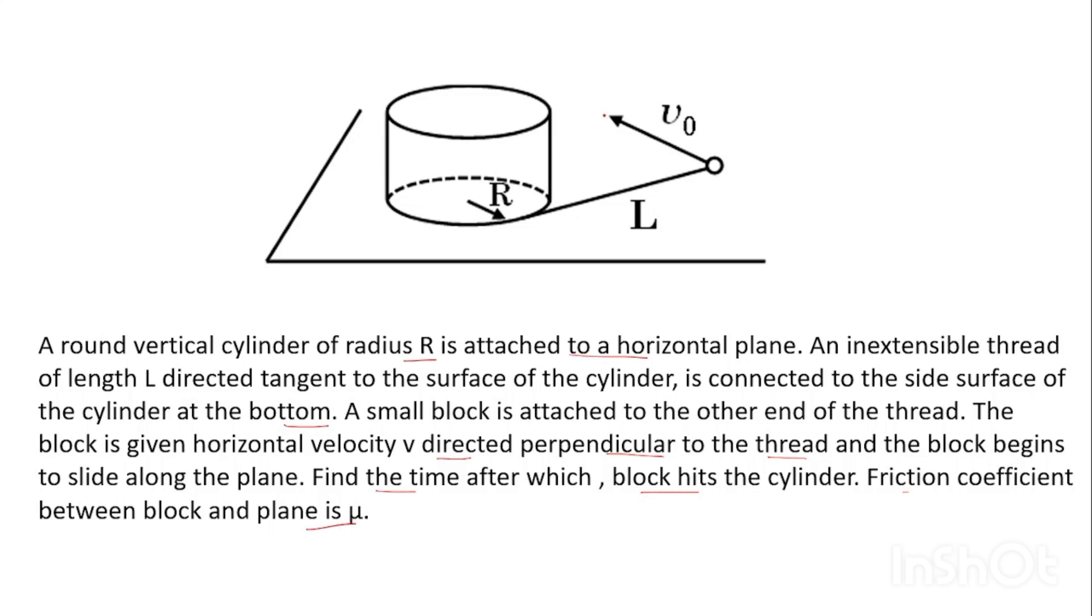This is the arrangement as you can see over here. Let us see its top view. I mean we are watching from the top. Then how does it look like? It is something like this. The cylinder is something like this. And suppose the initial alignment of the thread is like this. And this is the block which is lying at the end of the thread.